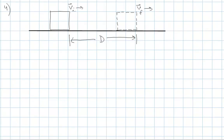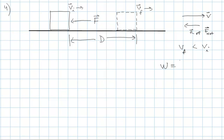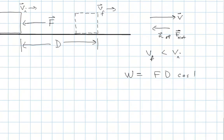One more case: the force is pointing to the left and the block is sliding to the right. Velocity is to the right but net force is to the left, so when they're in opposite directions, we expect the block to slow down. The work done is force times distance times cosine of 180 degrees, giving negative work. The object lost energy due to our interaction with it — we did negative work on it, it slowed down.